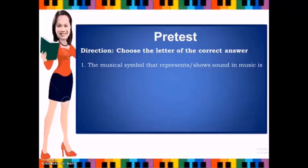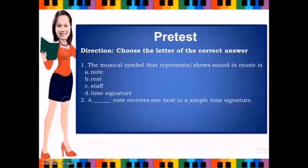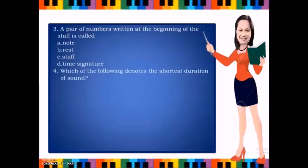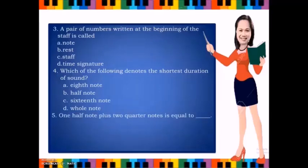...A: note, B: rest, C: staff, D: time signature. Number two: a blank note receives one beat in a simple time signature — A: whole, B: half, C: quarter, D: eighth. Number three: a pair of numbers written at the beginning of the staff is called A: note, B: rest, C: staff, D: time signature. Number four: which of the following denotes the shortest duration of sound — A: eighth note, B: half note, C: sixteenth note, D: whole note. Number five: one half note plus two quarter notes is equal to — A: one beat, B: two beats, C: three beats, D: four beats.